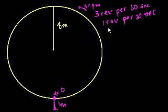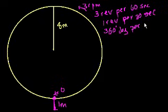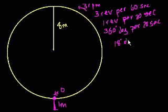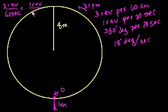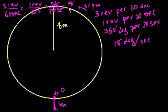One revolution is 360 degrees, so that's 360 degrees per 20 seconds. If you're going 360 degrees per 20 seconds, divide both sides by 20 and you get 18 degrees per second. So: 3 revs over 60 seconds equals 1 rev over 20 seconds, which equals 360 degrees over 20 seconds, which equals 18 degrees per second.